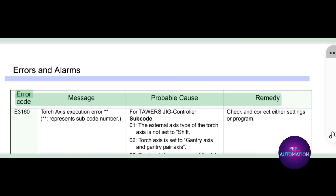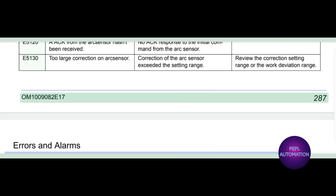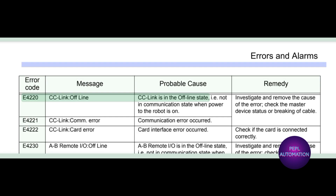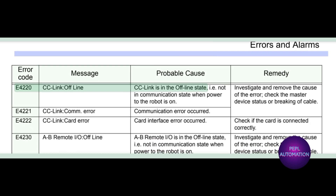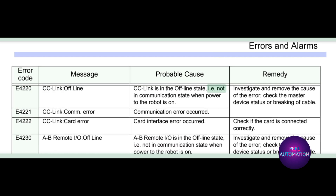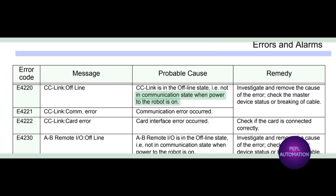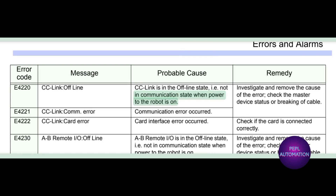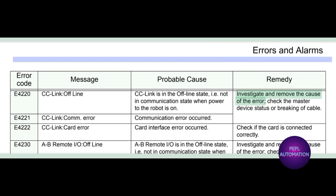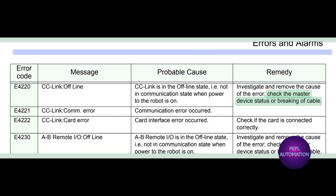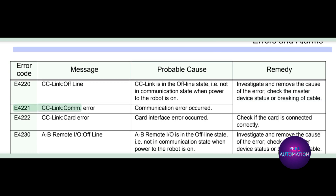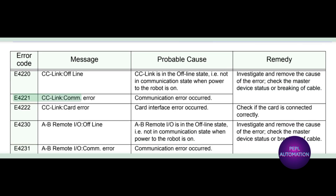E4220 CC link offline: CC link is in the offline state, i.e., not in communication state when power to the robot is on. Investigate and remove the cause of the error. Check the master device status or breaking of cable.